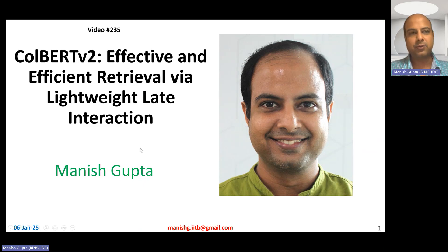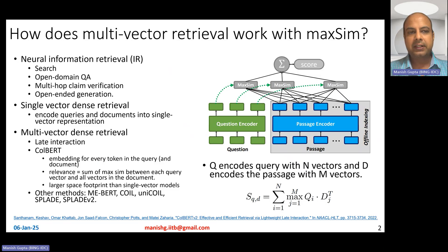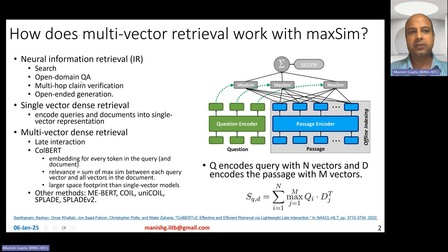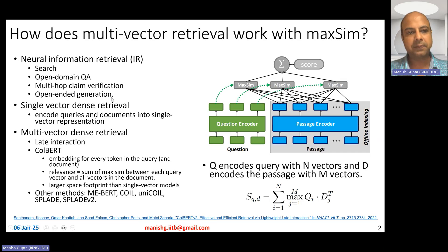Let's try to understand the meaning of these words. First, let me talk about neural retrieval, single vector retrieval, and multi-vector dense retrieval. When somebody says dense retrieval, they basically mean using neural networks to do information retrieval. Neural information retrieval has become very popular especially in the past two to three years, for search and knowledge-intensive tasks like open domain question answering, multi-hop claim verification, open-ended generation, and so on.